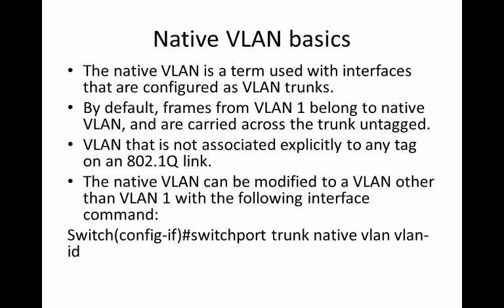Native VLAN is also something people get confused with. Native VLAN is a term used with interfaces configured as VLAN trunks. By default, frames from VLAN 1 belong to the native VLAN and are carried across the trunk untagged. This would be traffic like CDP — Cisco Discovery Protocol — which doesn't have any tag associated with it. Cisco uses VLAN 1 to transmit that packet. By default on a Cisco switch, a trunk port will have a native VLAN of VLAN 1.